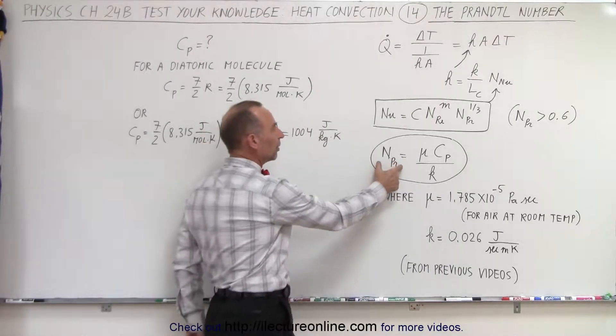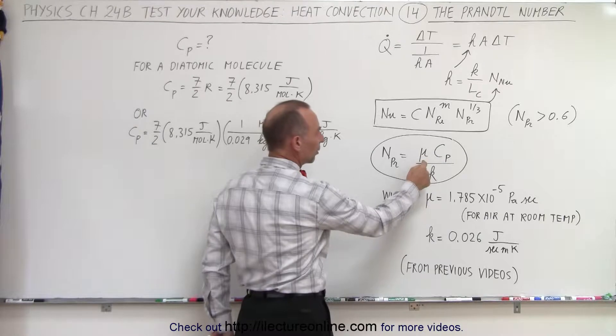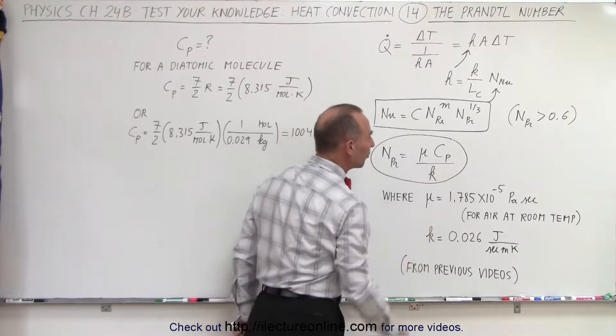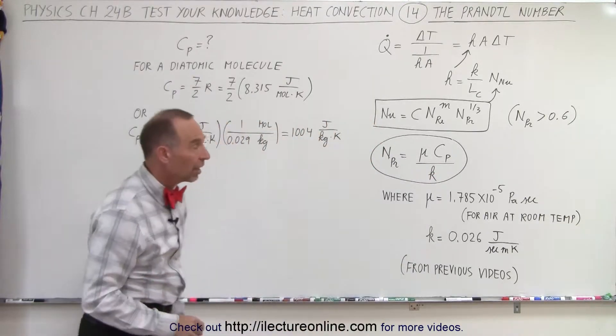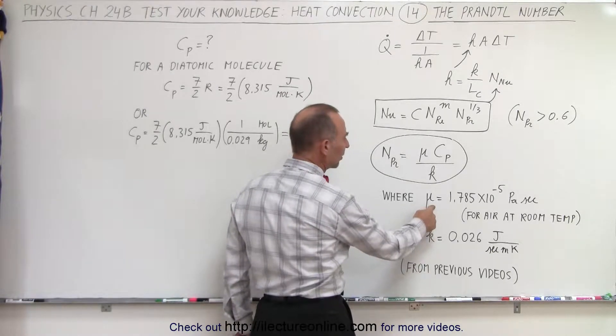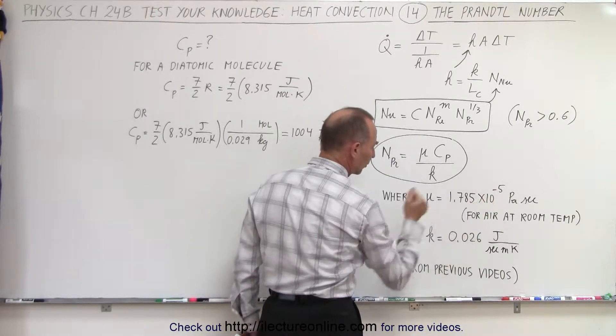So the Prandtl number is defined as the product of the viscosity times the specific heat of the material under constant pressure divided by the heat conductivity of the fluid. And so here from a previous video we noticed that the viscosity for air at room temperature was equal to this.